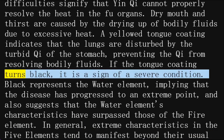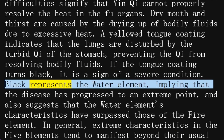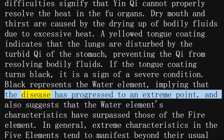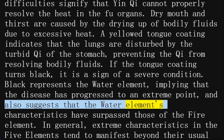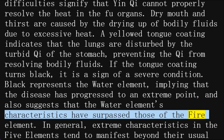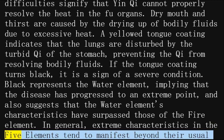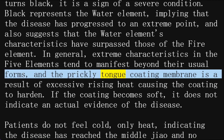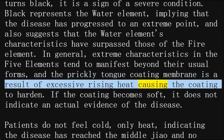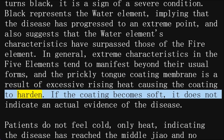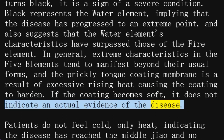If the tongue coating turns black, it is a sign of a severe condition. Black represents the water element, implying that the disease has progressed to an extreme point, and also suggests that the water element's characteristics have surpassed those of the fire element. In general, extreme characteristics in the five elements tend to manifest beyond their usual forms, and the prickly tongue coating membrane is a result of excessive rising heat causing the coating to harden. If the coating becomes soft, it does not indicate an actual evidence of the disease.